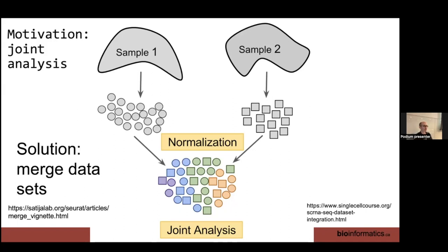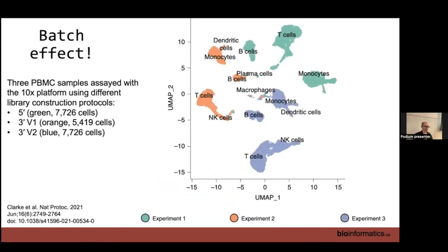The motivation is to do joint analysis over many samples. If you have only one sample, you don't need to listen to anything I'm going to say. But if you have more than one sample, you're going to have to combine them in some way to analyze them together. The basic idea is that you normalize each sample and then combine them. The simple way is merging — there's a merge function in Seurat where you can just take data and put it together in the same object and then visualize it and do other things with it.